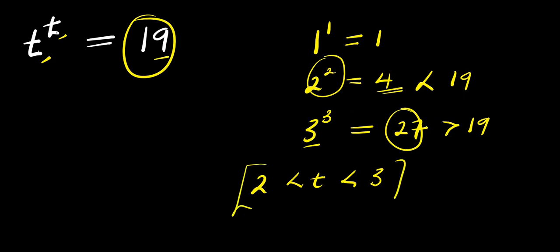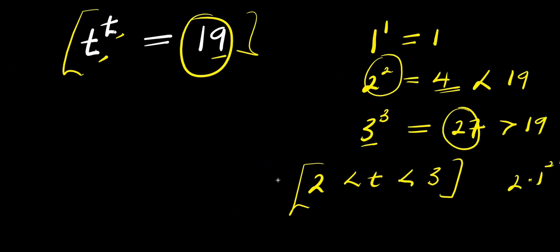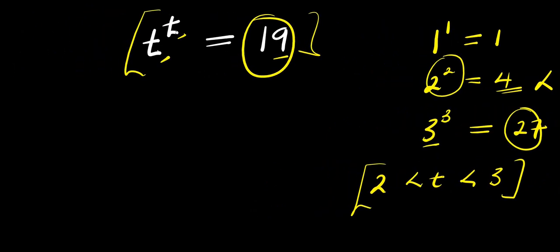Now we cannot start considering maybe 2.1 to the power of 2.1, 2.2 — we cannot be doing that. So what we are going to do is solve this problem using the Lambert W function, and let's find out the solution. So without wasting much time, let's get started.